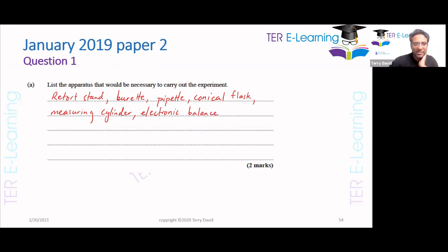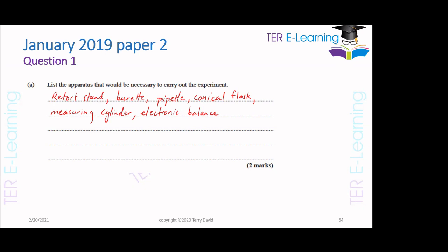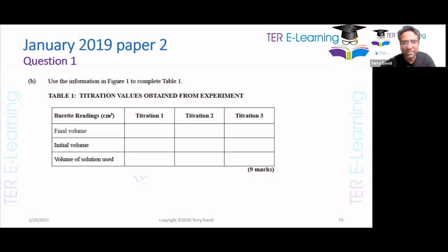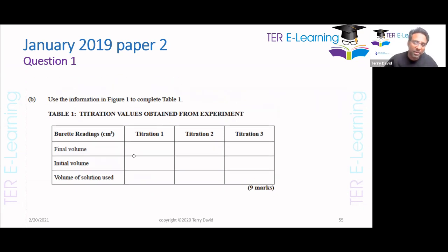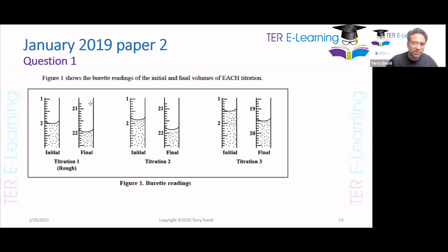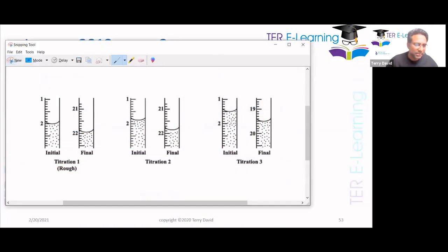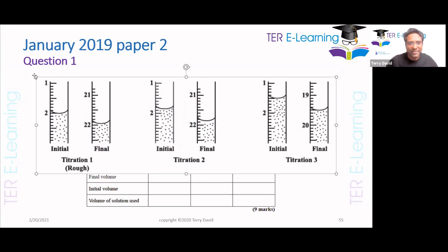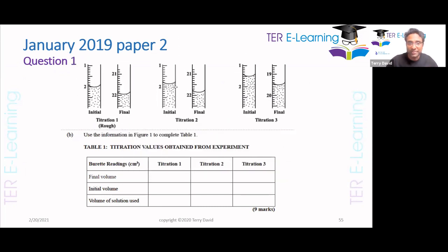And we also need to measure the mass of the tablet, so you need an electronic balance. This is two marks. Now we have titration results — it shows the burette readings of the initial and final volumes of each titration. Look at how many marks for this: this is nine marks just to fill out the table.